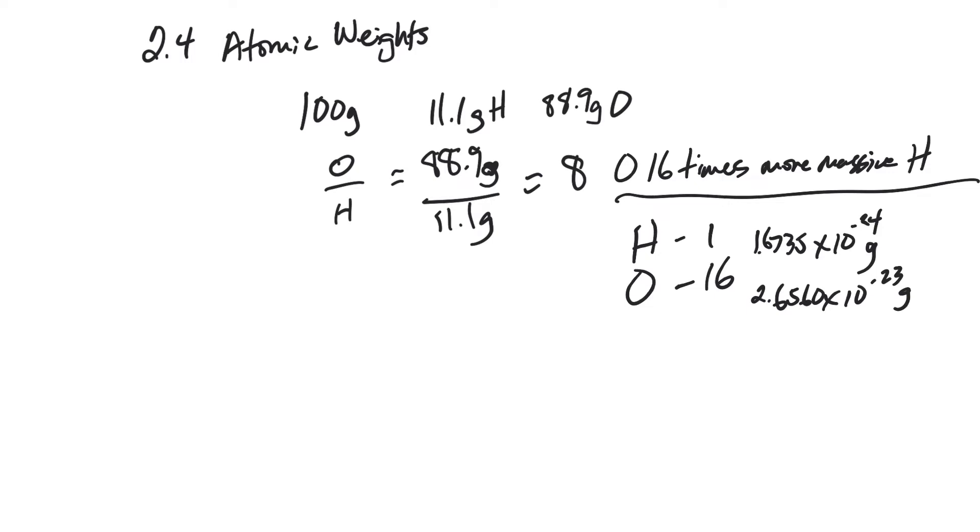So there's a simpler way, which is an atomic mass unit. It's going to be the average between a proton and a neutron.